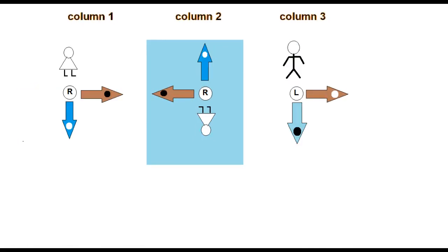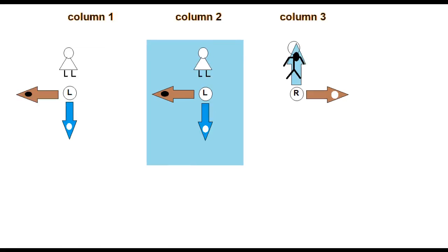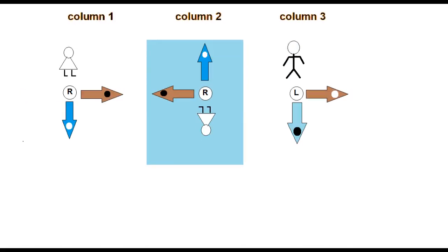It also shows why such a spin correlation does not exist subsequent to the first measurement, and how the chiro-temporal correlation is maintained throughout.